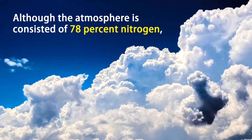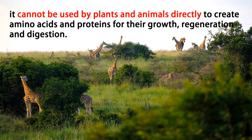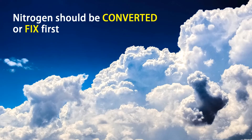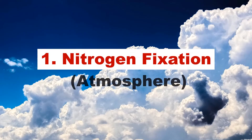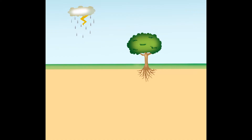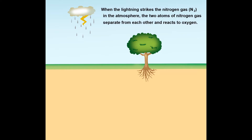Sequence 1: Fixing nitrogen in the atmosphere. Although the atmosphere consists of 78 percent nitrogen, it cannot be used by plants and animals directly to create amino acids and proteins for their growth, regeneration, and digestion. Nitrogen should be converted or fixed first before it becomes useful to all living things. When lightning strikes, the nitrogen gas in the atmosphere causes the two atoms of nitrogen to separate from each other and react with oxygen.